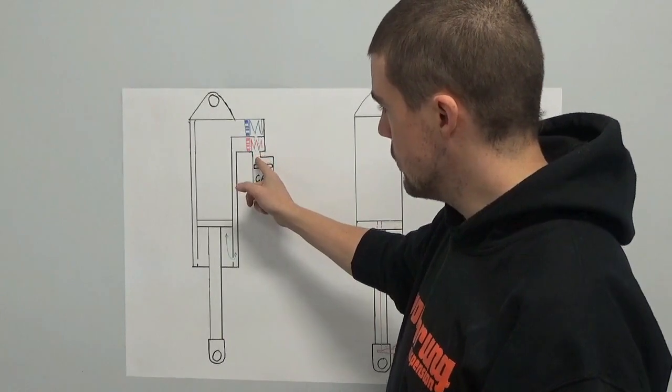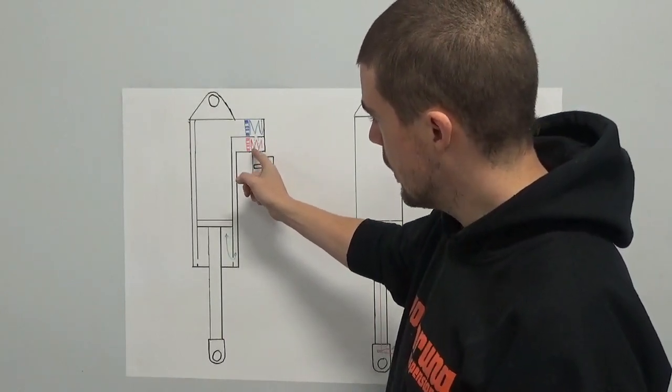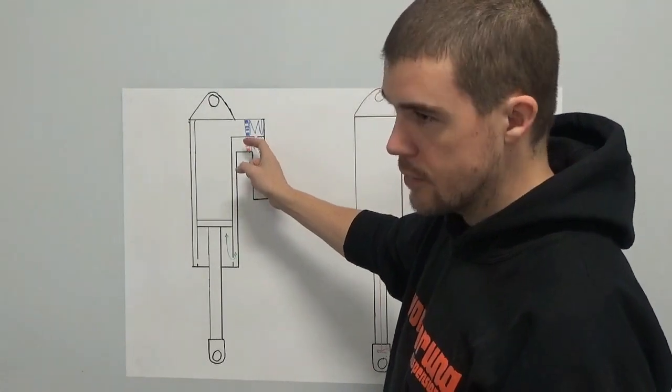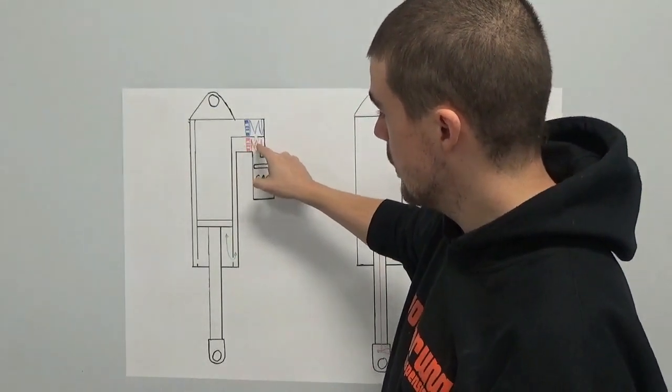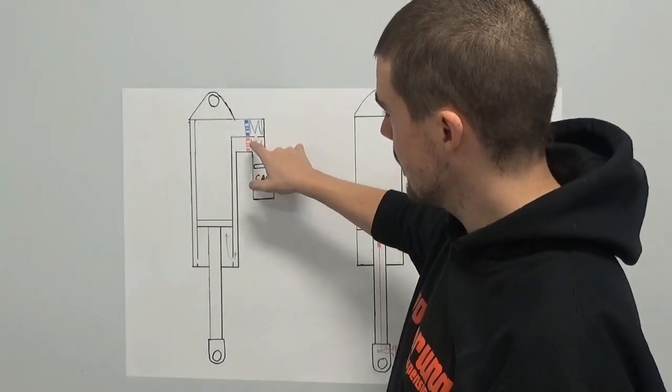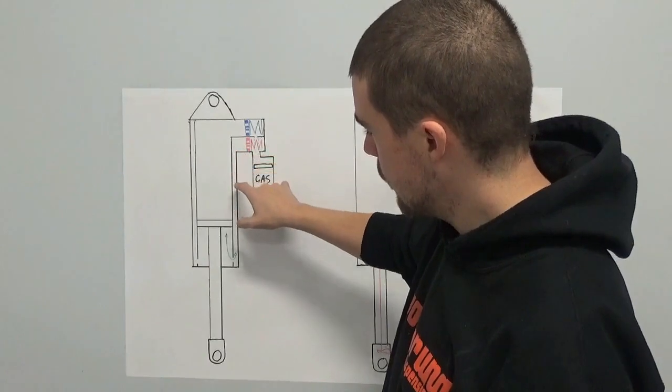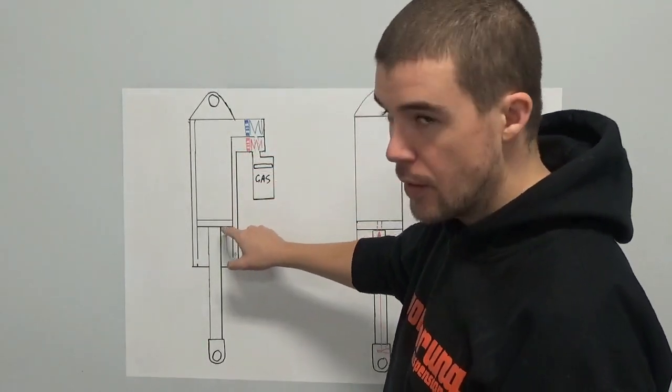The important part of the twin tube shock is that the reservoir pressure will then provide a pressure that forces the oil through the check valve in the rebound adjuster here, in the rebound damping circuit, and back around between the inner and outer tubes and then back around behind the piston.